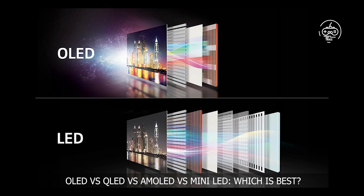OLED vs. QLED vs. AMOLED vs. Mini-LED — overall, OLEDs tend to be the best when compared against QLED, AMOLED, and Mini-LED. However, there are ways in which the other types are better. I'll go over these different categories and list the displays from best to worst, but you'll want to read through everything carefully as there are some caveats to keep in mind.